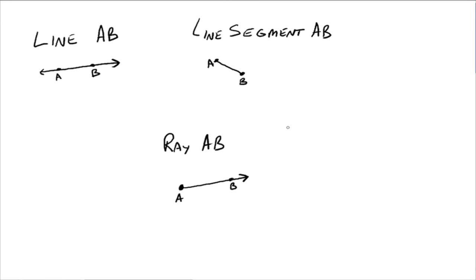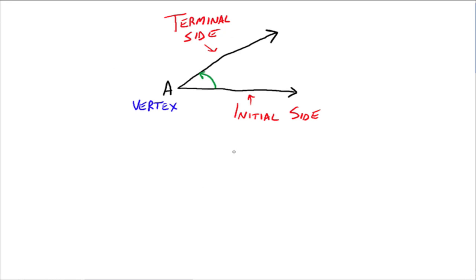Whereas a ray, you start at some place and then you go off forever in a direction. So now we're going to talk about measuring angles. You've got a ray going off this direction and a ray going off this direction, and there's some angle in between them.